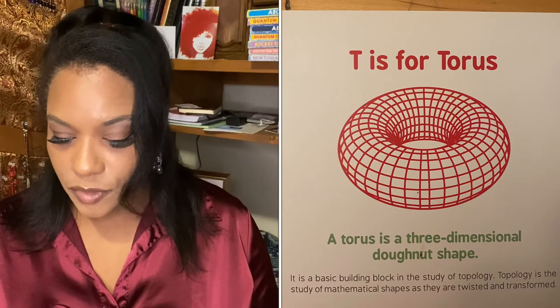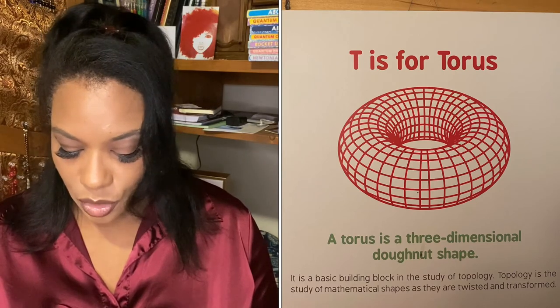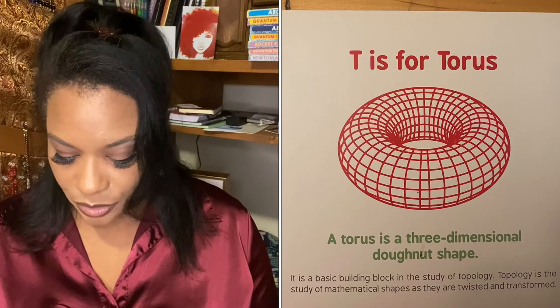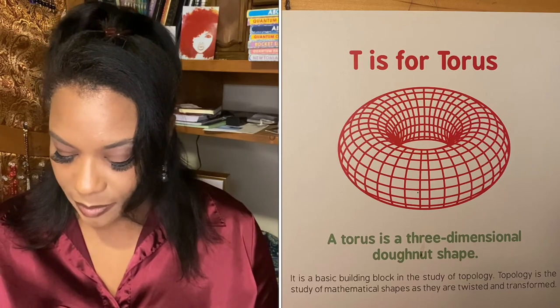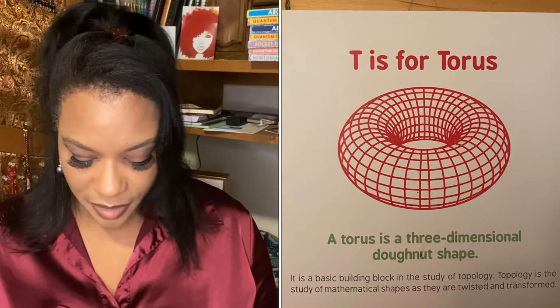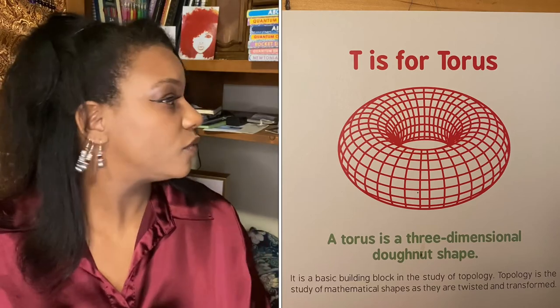T is for torus. A torus is a three-dimensional donut shape. It is a basic building block in the study of topology. Topology is the study of mathematical shapes as they are twisted and transformed.